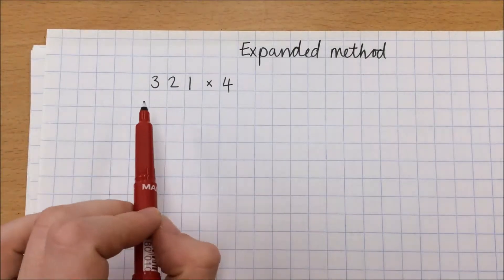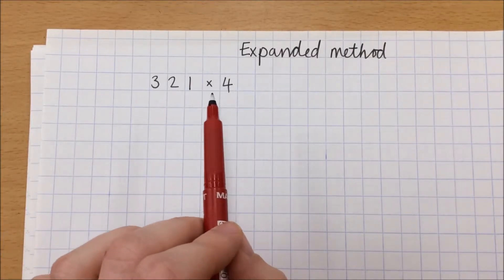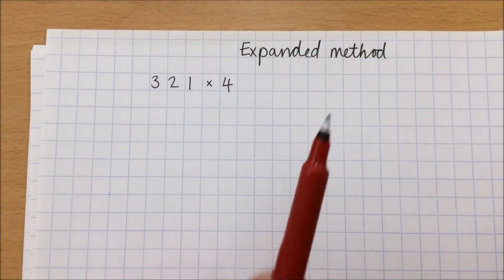Okay, I'm now going to show you how to multiply 321 by 4, so a three-digit number multiplied by a one-digit number, using the expanded method.